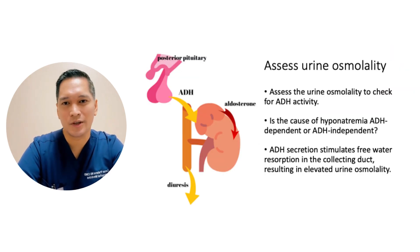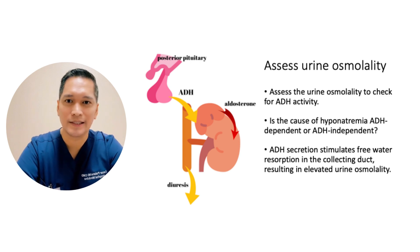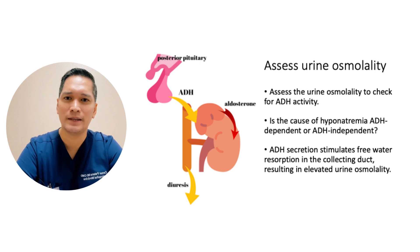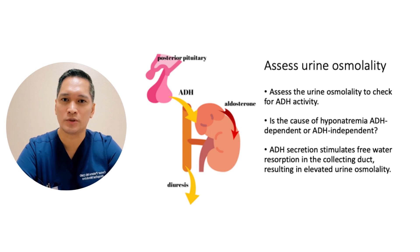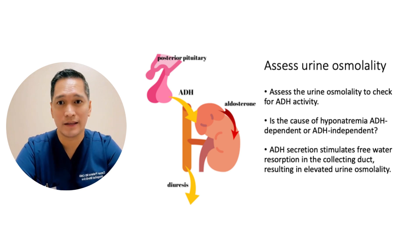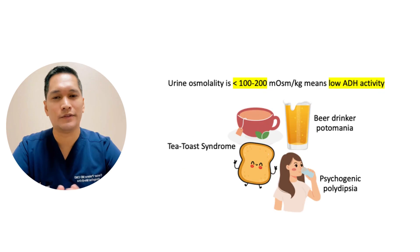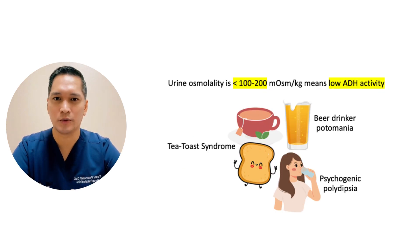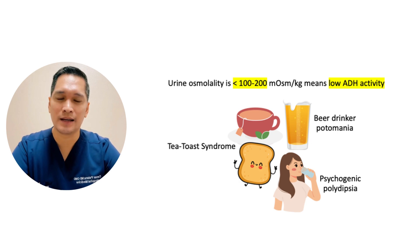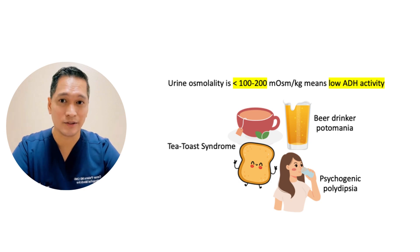The second step is to assess urine osmolality to check ADH activity. Ask yourself: is the cause of the hypernatremia ADH-dependent or ADH-independent? ADH secretion stimulates free water resorption in the collecting duct, resulting in an elevated urine osmolality. If the urine osmolality is low, less than 100 to 200, then the cause of hypernatremia is an ADH-independent disease, meaning ADH levels are low. Common causes include TNT syndrome, beer potomania, and psychogenic polydipsia.